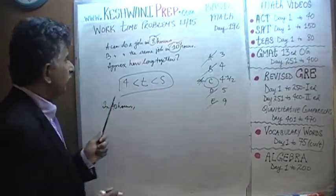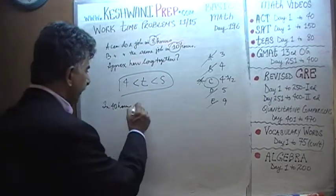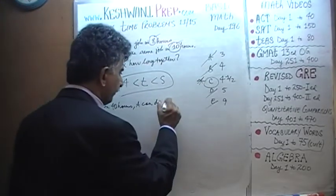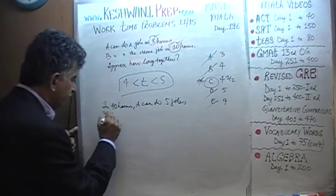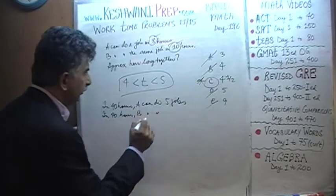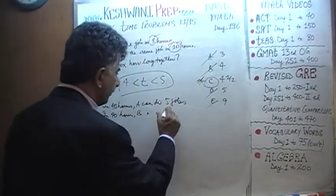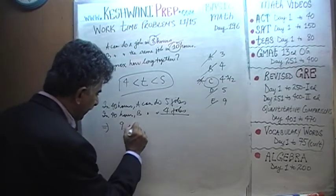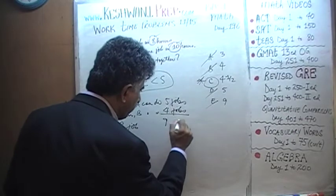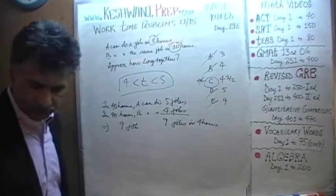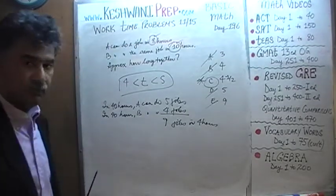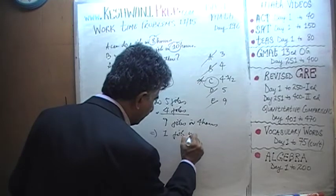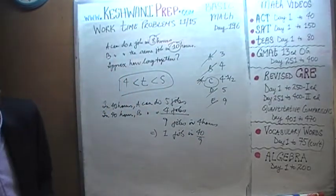In 40 hours: A takes 8 hours to do one job, so give A 40 hours and he can do 5 jobs. Similarly, B takes 10 hours per job, so in 40 hours B can do 4 jobs. Together they can do 9 jobs in 40 hours. We only need 1 job done, so 1 job takes one-ninth of 40 hours, which is 40 over 9.